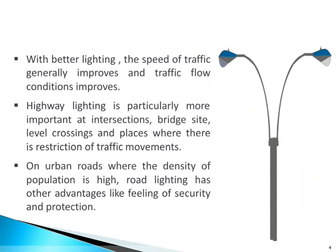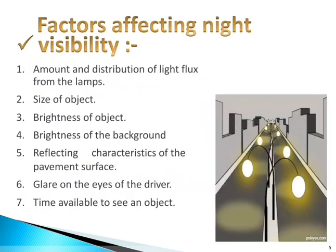On urban roads where the density of population is high, road lighting has other advantages like a feeling of security and protection. Factors affecting night visibility include: amount and distribution of light flux from the lamps, size of object, brightness of object, brightness of the background, reflecting characteristics of the pavement surface, glare on the eyes of the driver, and time available to see an object.